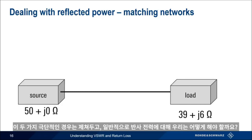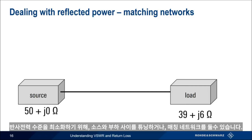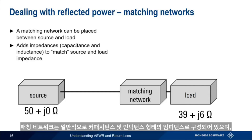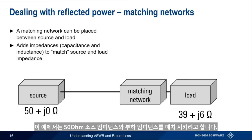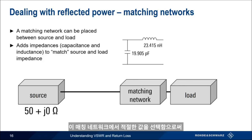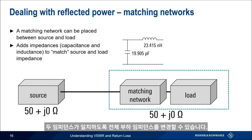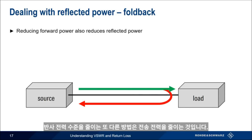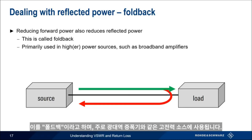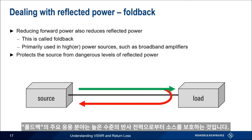Setting aside these two extreme cases, what do we do about reflected power in general? One way to minimize the level of reflected power is to place a tuning or matching network between the source and the load. The matching network consists of impedances, usually in the form of capacitance and inductance, designed such that adding this additional impedance matches the load impedance to the source impedance. In this example, we want to transform our complex load impedance to match the purely resistive 50 ohm source impedance. Another way to reduce the level of reflected power is to reduce the level of transmitted power, which is called foldback and is primarily used in higher power sources such as broadband amplifiers. The main application of foldback is protecting the source from high levels of reflected power, which can cause performance degradation and even permanent damage.